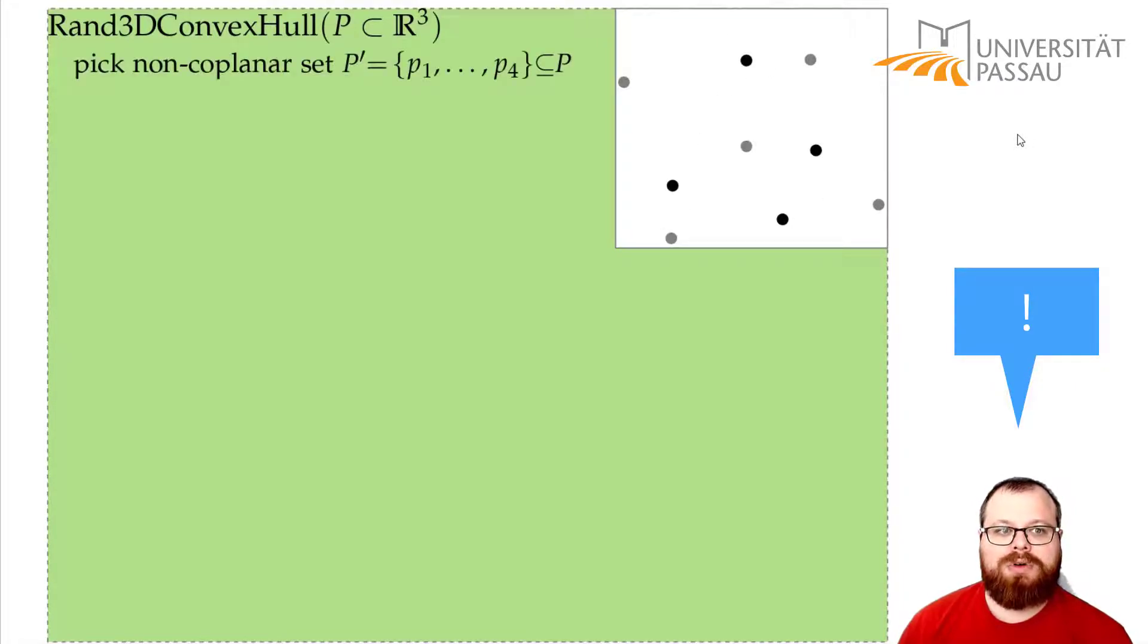And in particular we need 4 points that are non-coplanar, so they don't lie on a common plane, for example these 4. And then we create the convex hull for them, that we can just do brute force however we want, since it's only 4 points, there are only a constant number of possibilities.